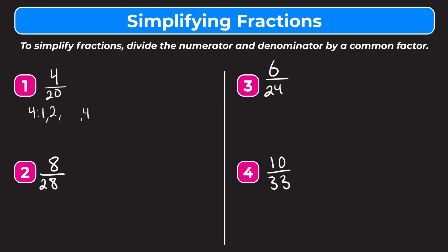Now let's list the factors of 20. We have 1 and 20, we also have 2 and 10, and there's also 4 and 5. That's it — there are no other factors of 20. Looking at both lists, we see that we have 1 in common, we also have 2 in common, and we have 4 in common.